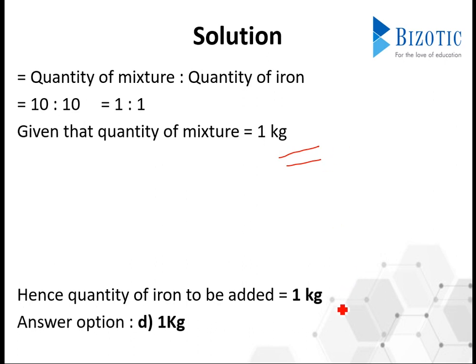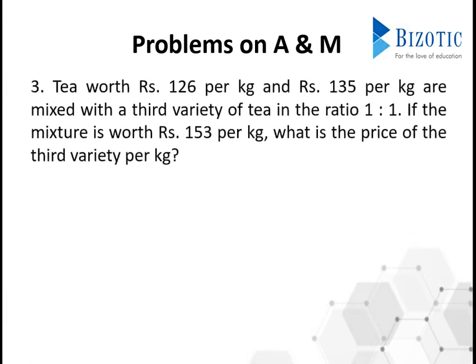Hence the quantity of iron to be added is equal to 1 kg — answer option D, 1 kg. Now let's move on to question number 3. Tea worth Rs. 126 per kg and Rs. 135 per kg are mixed with a third variety of tea in the ratio 1:1. If the mixture is worth Rs. 153 per kg, what is the price of the third variety per kg?